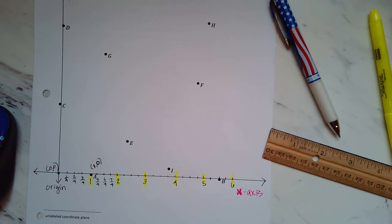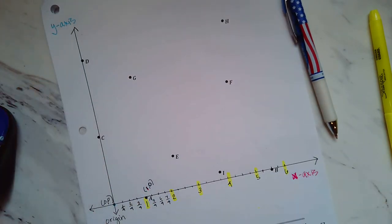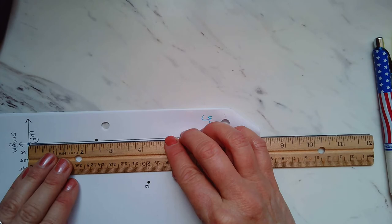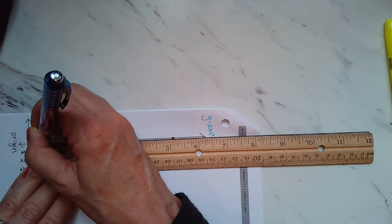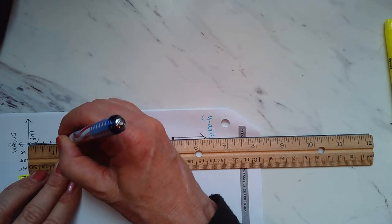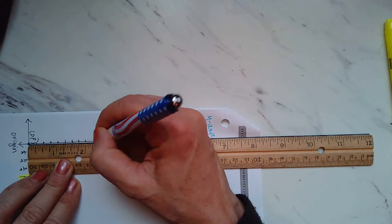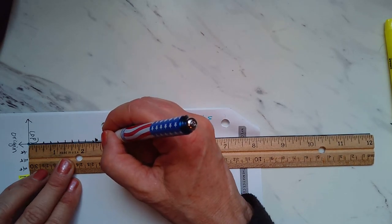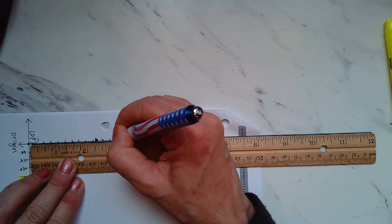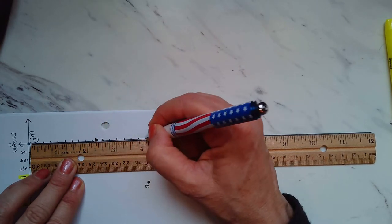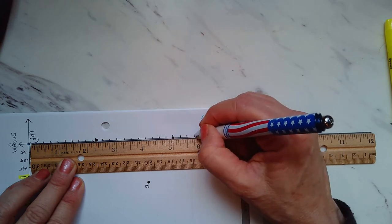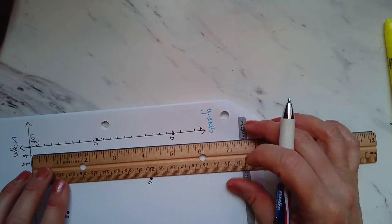Next, I want you to label the y-axis in the same way you labeled the x-axis. If you want to turn your paper. And remember, we're going to only do the tick marks, the hash marks, and we're only going to label the whole numbers.